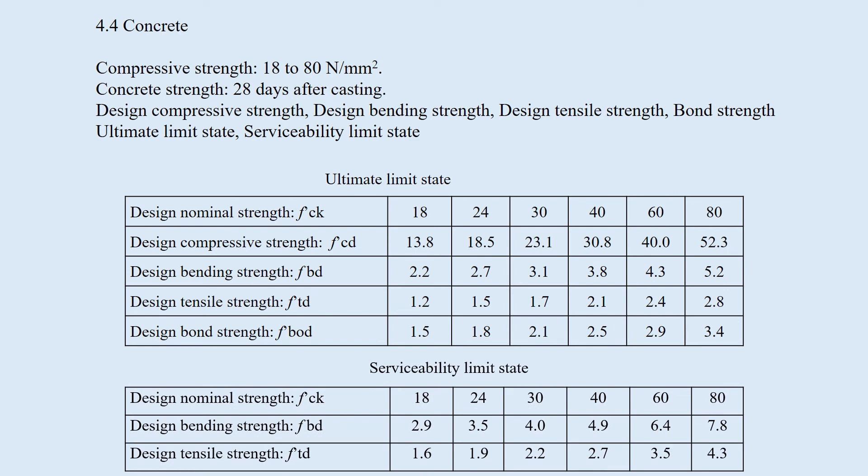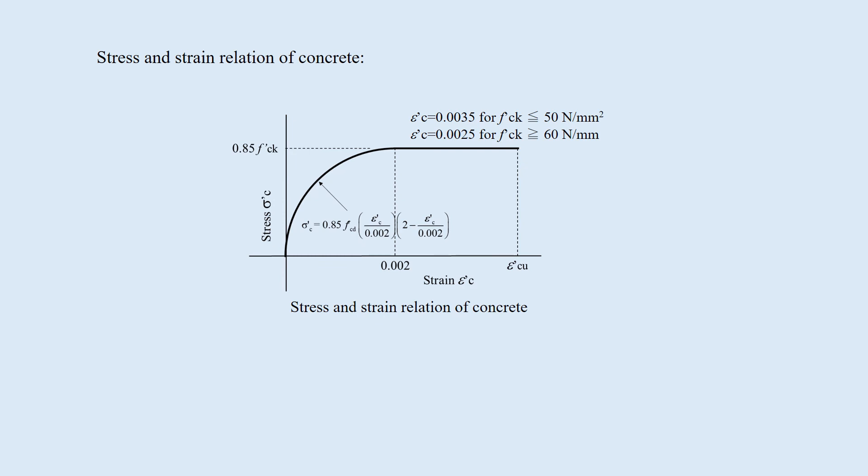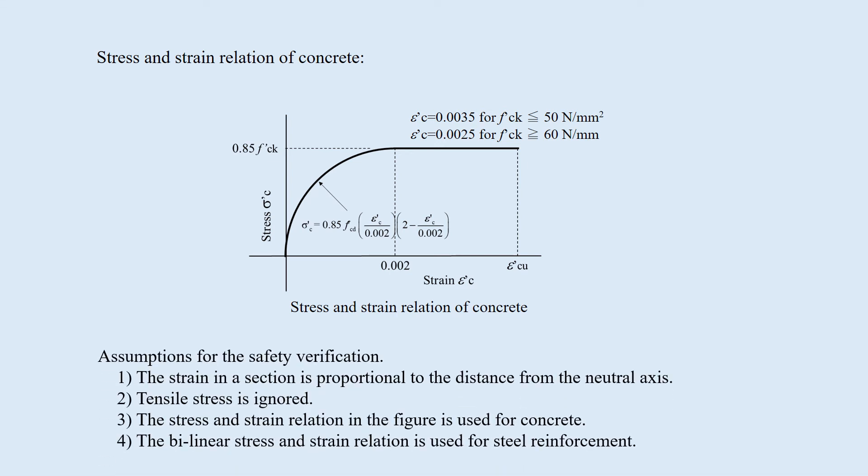The design bending strength and tensile strength under the serviceability limit state are also shown here. The stress and strain relation of concrete, shown in this figure, is used to calculate the ultimate strength. It is non-linear, with an ultimate strain of 0.0035 or 0.0025. These assumptions are used for this verification.